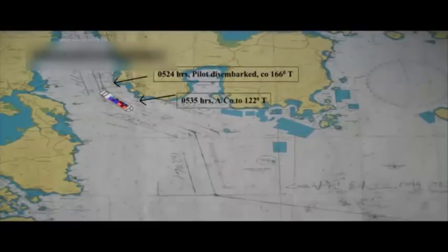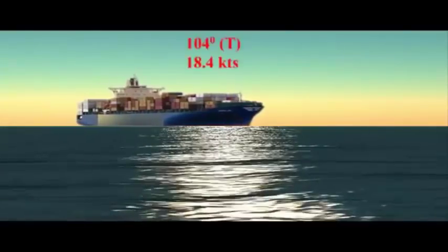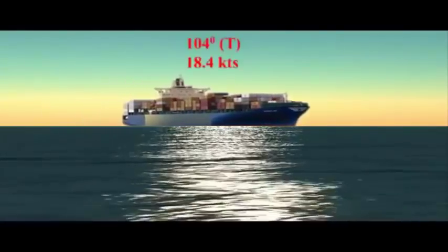On 14th of December 2011, MV ABC sailed from South Korean port Kuan Yin to Pusan. Ship was on course 104 degrees true, speed 18.4 knots.